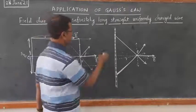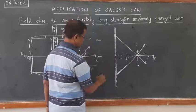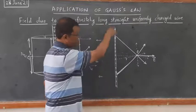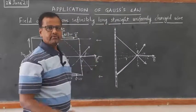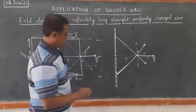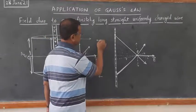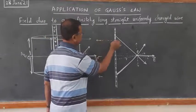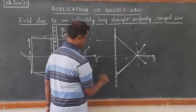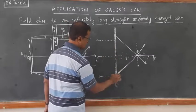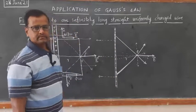At any point, since it is an infinitely long uniformly charged wire, we can prove that the electric field is always perpendicular to the charged wire.